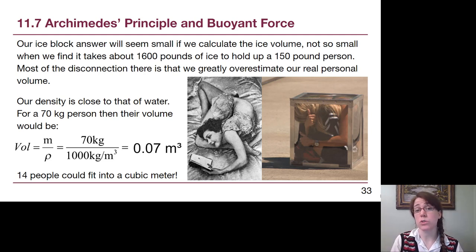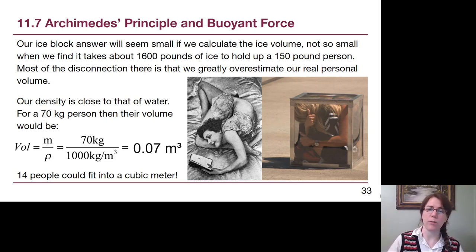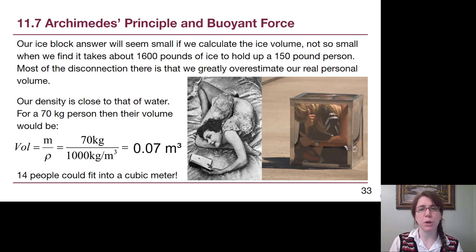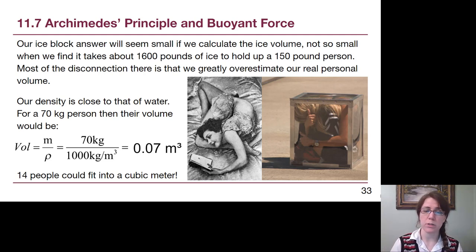The mass is huge — we need 1,600 pounds of ice to hold up that person. Most of the big disconnect between our understanding of volume and whether it seems big or small is that we really overestimate the physical volume of our bodies. If we take an average person's mass of 70 kilograms and divide it by the density of water, because we are mostly made of water, we get the volume that a single person takes up: 0.07 cubic meters. So 14 people could, quite uncomfortably, fit into a cubic meter worth of space.